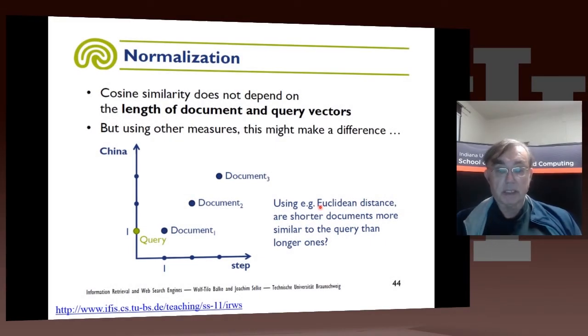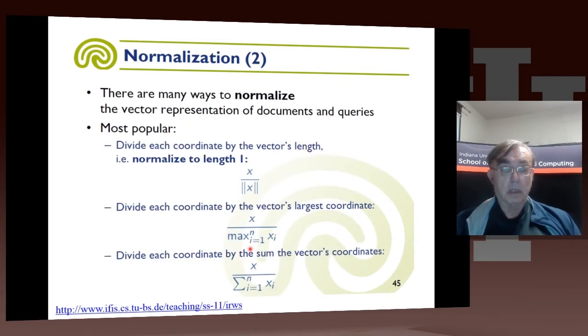So, as I said, there are various choices that one has to worry about. If you use Euclidean distances, shorter documents tend to be more similar than longer documents. But we can normalize things to get rid of this type of effect. So you divide each component by the vector's length. So you effectively represent all documents by vectors of length 1.